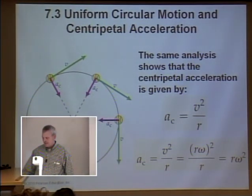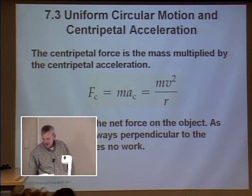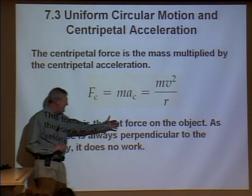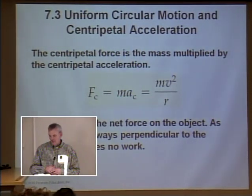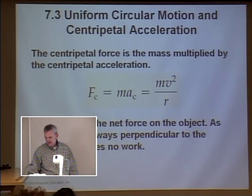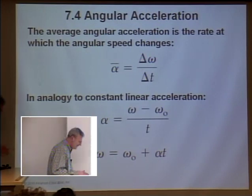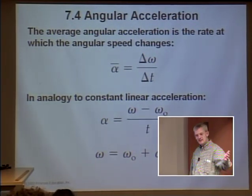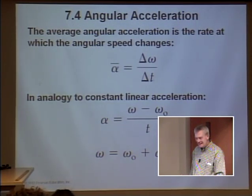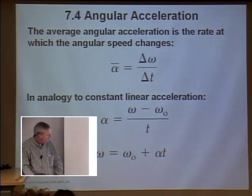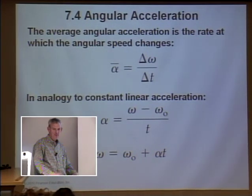The centripetal force — mass times centripetal acceleration — is the net force on the object. This force is always perpendicular to the velocity and it does no work because it's perpendicular to the direction of motion. Now back to the blender: the angular acceleration alpha gets those blades from zero to a very fast omega. We've left uniform circular motion — constant omega — and moved to angular acceleration.